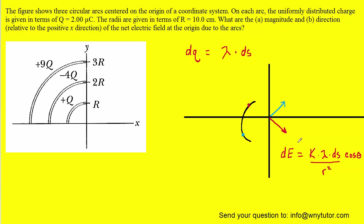That expression is the electric field produced by just this tiny amount of charge. We want the total electric field produced by the entire circular arc, which means we're going to have to integrate this expression. The only challenge is that we have two variables: theta as well as s. It turns out there's a nice relationship between ds and d-theta: ds equals r·dθ. That might be familiar from geometry, where the arc length equals a radius multiplied by an angle measured in radians. We don't have an entire arc length here, just a very tiny differential arc length, so we substitute r·dθ for ds.